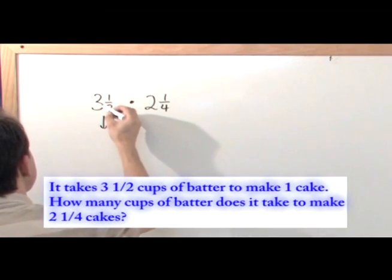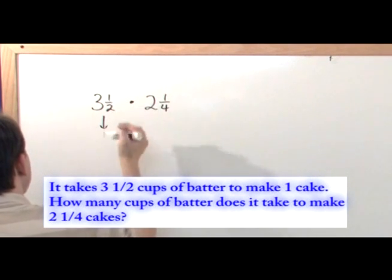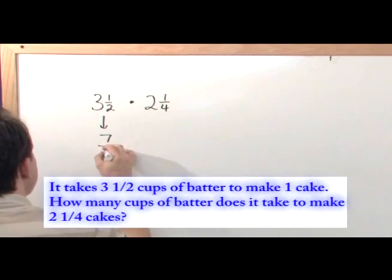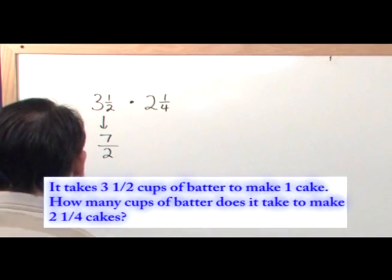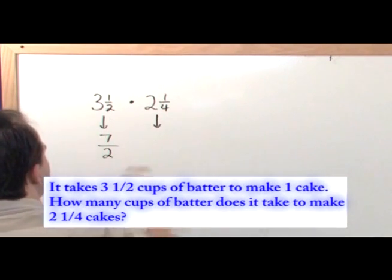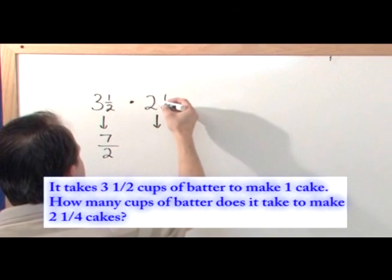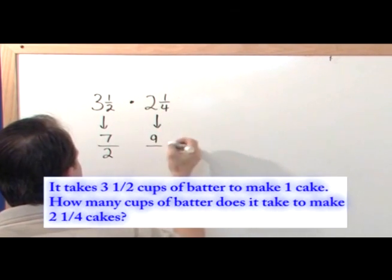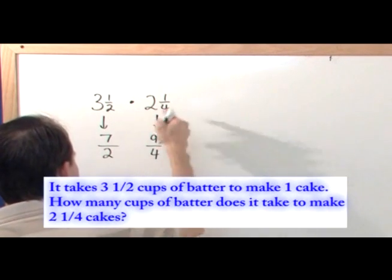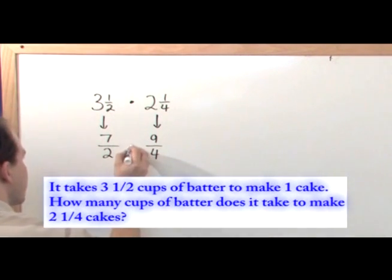Two times three gives us six plus one gives us seven and you just write it over the bottom number here, which is two. And this one is the same kind of thing. Four times two gives us eight plus one gives us nine and you just write it over four, which is its bottom number. And don't forget we're multiplying these together.